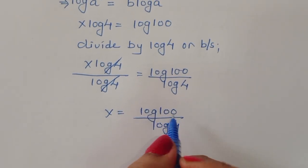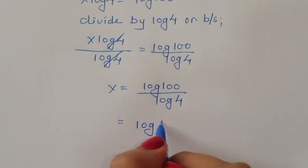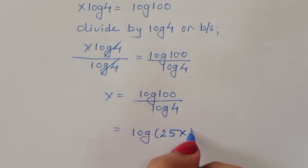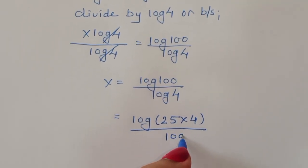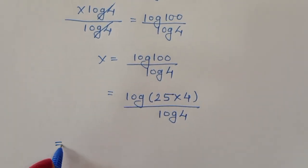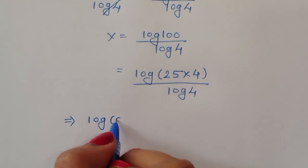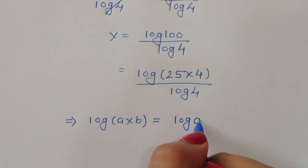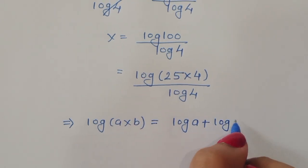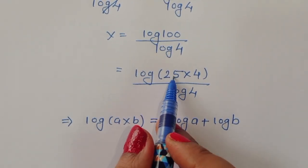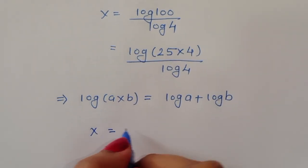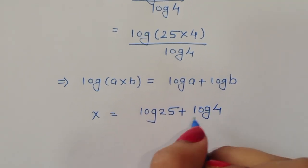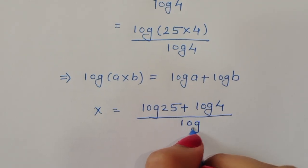Now, log of 100 — we can write 100 as 25 times 4. So we have log of 25 times 4 divided by log of 4. Using the formula that log of a times b equals log of a plus log of b, we can write this as log of 25 plus log of 4. So x is equal to log of 25 plus log of 4, divided by log of 4.